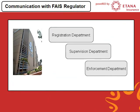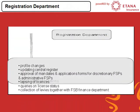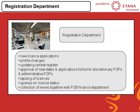Let's look at three of the departments within the FAIS division of the FSB, namely the Registration Department, the Supervision Department and the Enforcement Department. The Registration Department is responsible for new license applications, profile changes, updating the central representative register, approval of mandates and application forms for discretionary FSPs and administrative FSPs, responsible for lapsing of licenses, queries on license status and collection of levies together with the FSB Finance Department.